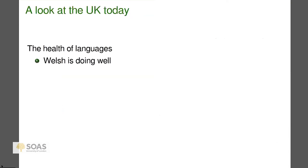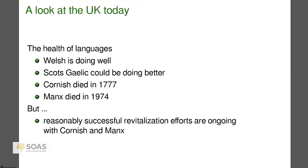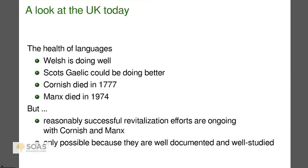Looking at how things are going in the UK: Welsh is doing well, Scots Gaelic could be doing better, Cornish died in 1777, Manx died in 1974. But there are revitalization efforts going on with Cornish and Manx. Something that can focus our minds is that Cornish and Manx have been able to do revitalization because the languages were well studied and well documented.